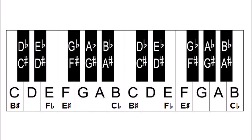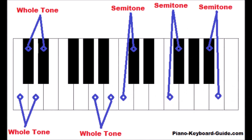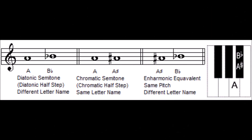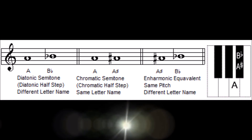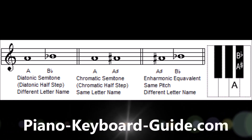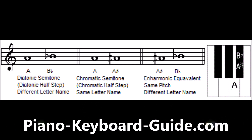When two notes have different letter names but are played by the same key, they are enharmonic equivalents. No matter the instrument, you would play the same note. The piano can help you visualize whole tones and semitones. Practice drawing chromatic and diatonic semitones, as well as whole tones and enharmonic tones on the staff.